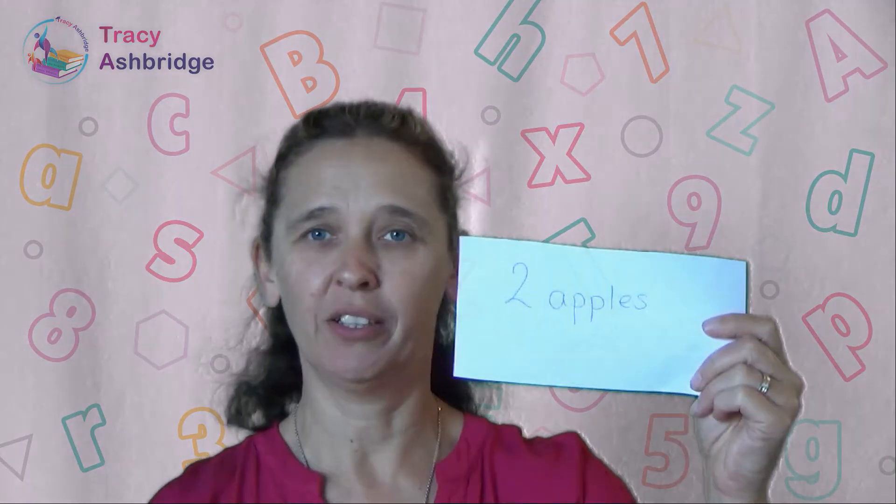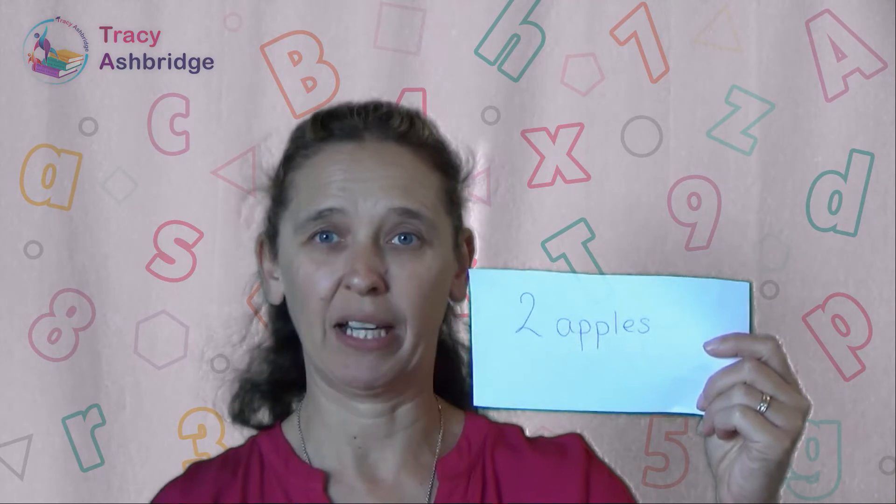And then on my third piece of paper I've written 'two apples,' which is totally abstract. The children have got no picture there, nothing to put their hands on and actually manipulate and look at. So this is very abstract, and for children in the early years of maths we really need to make sure we do lots of concrete, moving to pictures, before we move to this abstract stage.